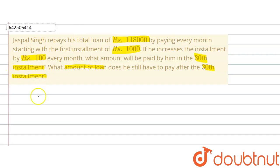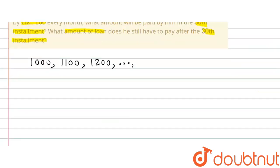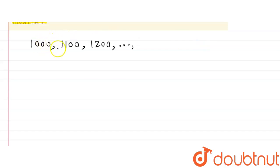Let's write down what the question is saying. Jaspal Singh pays Rs. 1,000 as an installment for the first month. In the second month he pays Rs. 1,100, because he increases the installment by Rs. 100. In the third month he pays Rs. 1,200, and so on. The difference between consecutive terms is Rs. 100 in each case.